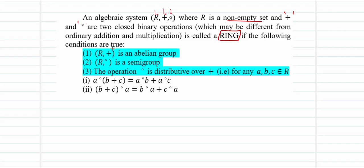The algebraic structure (R, +, ·) is called a ring if it satisfies three conditions. Condition one: with respect to the first binary operation (+), it must form an abelian group. Condition two: with respect to the second binary operation (·), it must form a semigroup. Condition three: the operation · is distributive over +, meaning a·(b+c) = a·b + a·c and (b+c)·a = b·a + c·a.